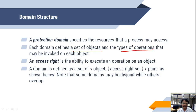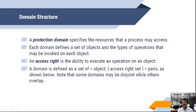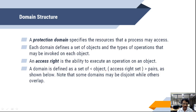Access right is the ability to execute an operation on an object. We have multiple operations, and access right defines, for example, only read — that is your access right — or only append, meaning you cannot write in between but only add at the end. A domain is defined as a set of objects, each with a set of access rights. This pair of object name and access rights defines the domain.